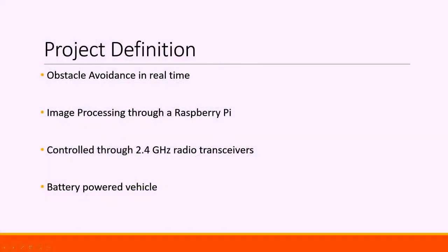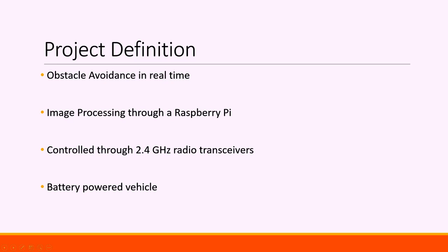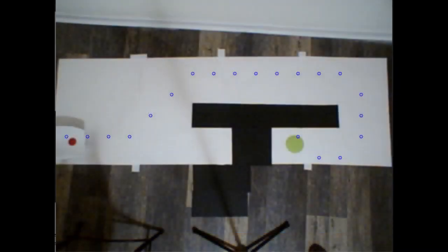To do this, we needed a battery-powered vehicle that could move freely, an automatic wireless transmission system, and a way to detect obstacles and monitor our vehicle. For object detection and monitoring, we chose to use an image processing system driven by a Raspberry Pi.